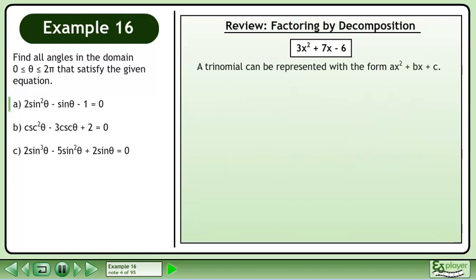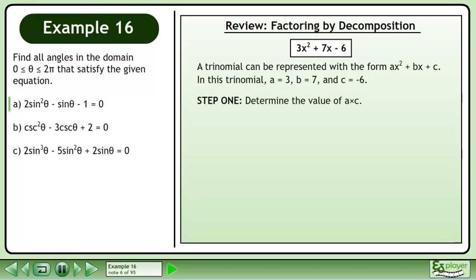A trinomial can be represented with the form ax² + bx + c. In this trinomial, a equals 3, b equals 7, and c equals negative 6. In step 1, determine the value of a times c. 3 times negative 6 equals negative 18.